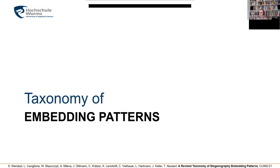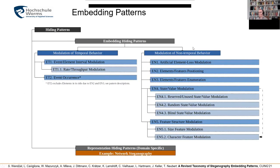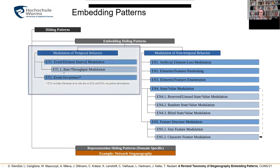The major contribution here is the embedding taxonomy. The representation patterns are, in this paper, only exemplified for the network steganography domain, and follow-up work will extend this to more domains. Looking at the embedding patterns, we differentiate between temporal and non-temporal behavior. All hiding patterns are either embedding or representation patterns. I won't cover the sub-patterns shown in light blue here for time reasons, but they are described in the paper.